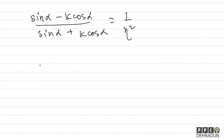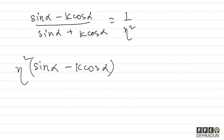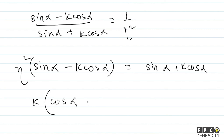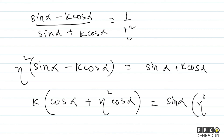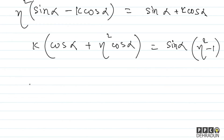Now we need to find k. Taking k common, we get: k(cos alpha + eta²·cos alpha) = sin alpha·(eta² minus 1).